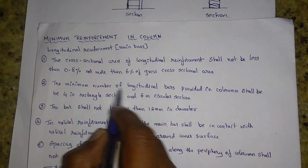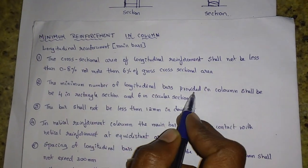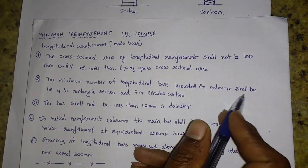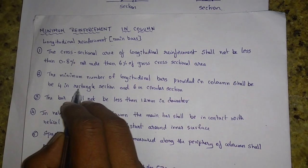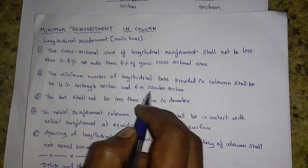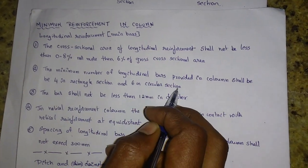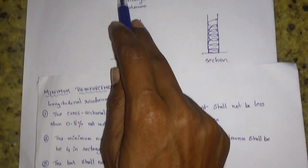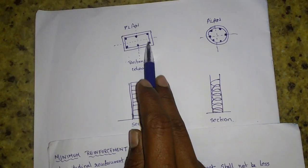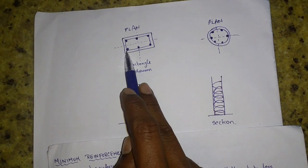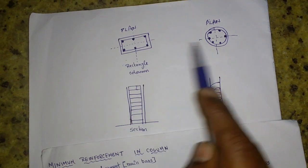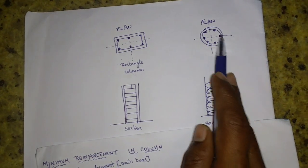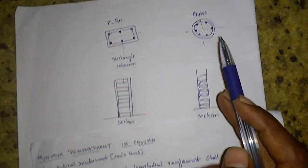The minimum number of longitudinal bars provided in a column shall be 4 numbers in a rectangular section and 6 numbers in a circular section. So in a rectangular section, minimum 4 bars, and in a circular section, minimum 6 bars.